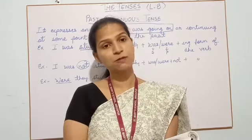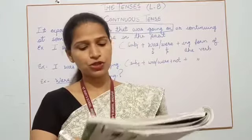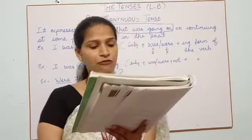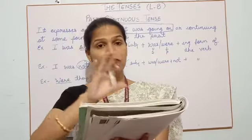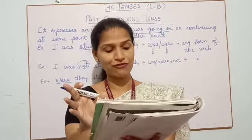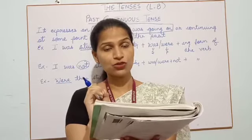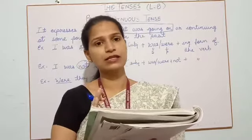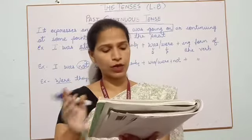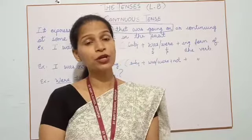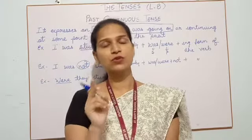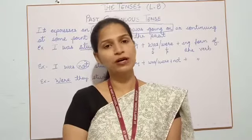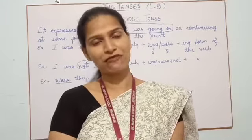Now we have past perfect tense. When we talk about past perfect, we are not going to use has or have, because has and have are used for present tense. For past tense we use 'had,' plus the third form of the verb. Let's learn about past perfect tense.